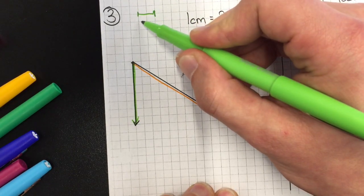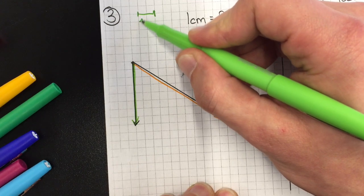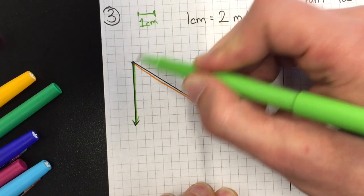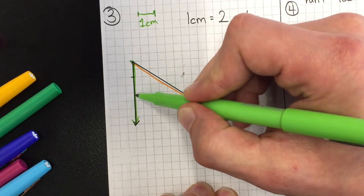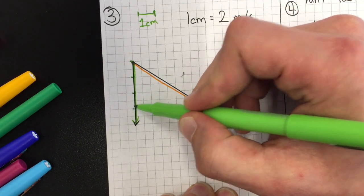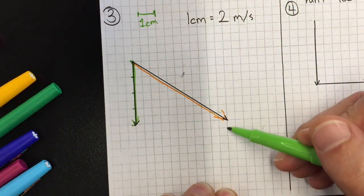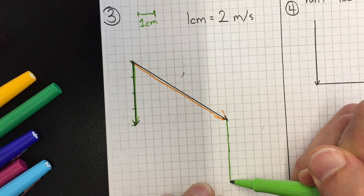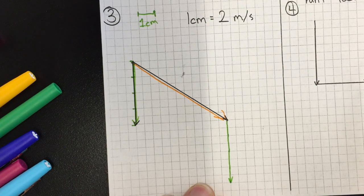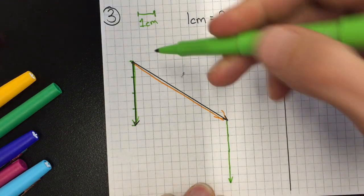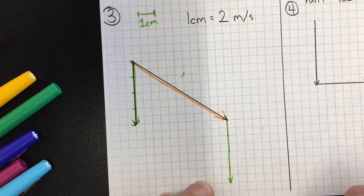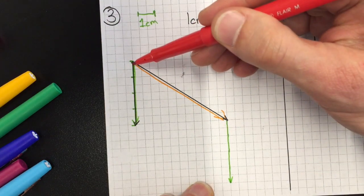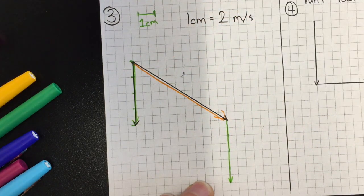So I can just count every two squares. This is one, two, three, four centimeters long, so I'm going to draw a one, two, three, four centimeter vector pointed straight down. And now I have both of my vectors added together. The resultant is just from our start to our finish.